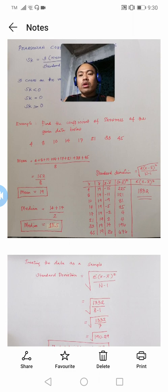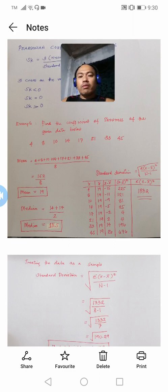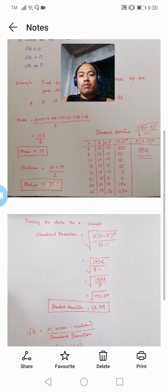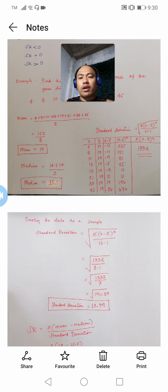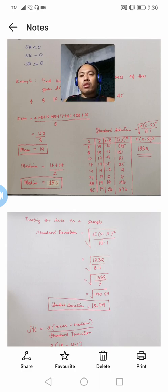We need to find first the mean using the arithmetic mean formula, and we will come up with a value of 19 as the mean of that given distribution.